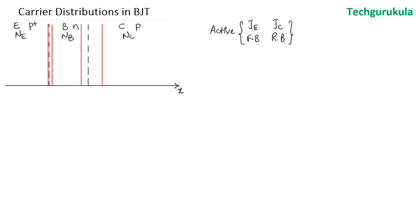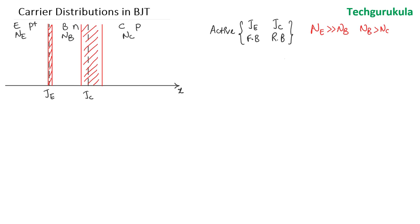Hence, the depletion widths are smaller at the emitter junction and larger at the collector junction. The doping relationship is N_E >> N_B, and N_B > N_C.